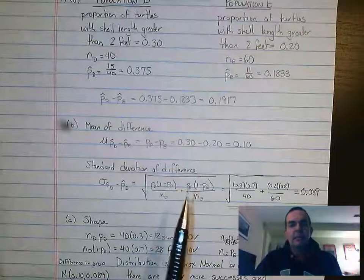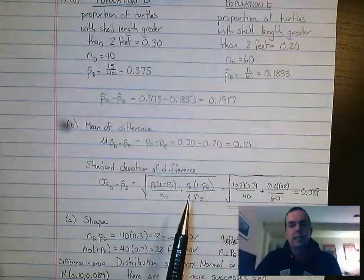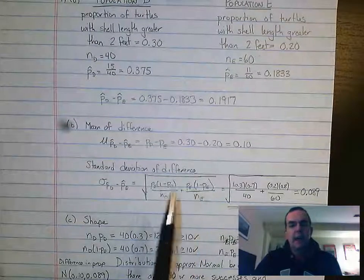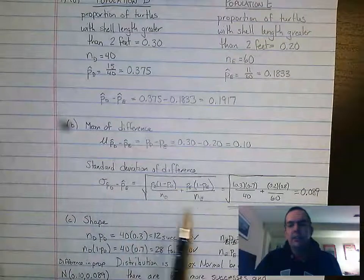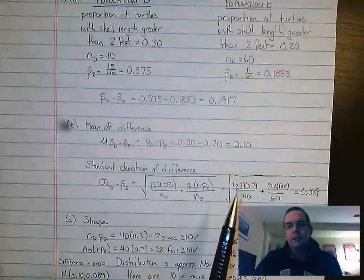So all about population d, plus pe times (1 minus pe) over ne. We're going to add those together. To figure out that standard deviation, we do 0.3 times 0.7 divided by 40.